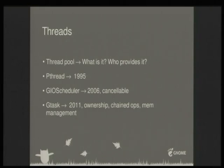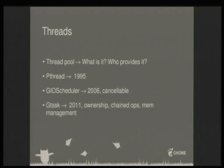What kinds of threads do we have? There is pthread, which uses the raw thread from the kernel, created in 1995. It's fine but has things we don't care about, like setting the stack size. Then glib, a well-known middleware library on Linux, provides an abstraction for threads and a better API. In 2006 it introduced the GIO scheduler — a way to manage threads, operations, and tasks — and also introduced GCancellable, which lets you cancel an operation or thread and check in the callback whether it finished successfully or was cancelled, so you don't access data that may have been freed.